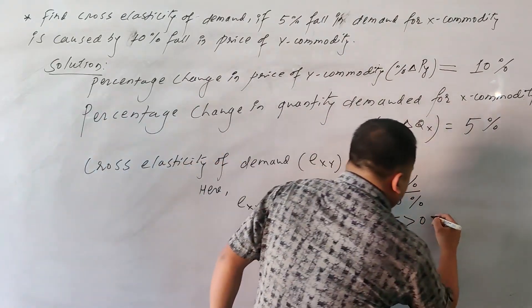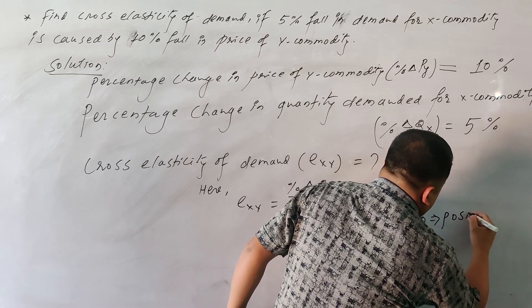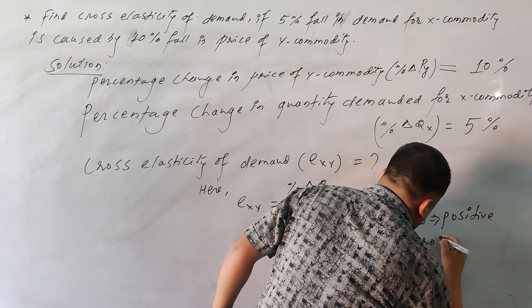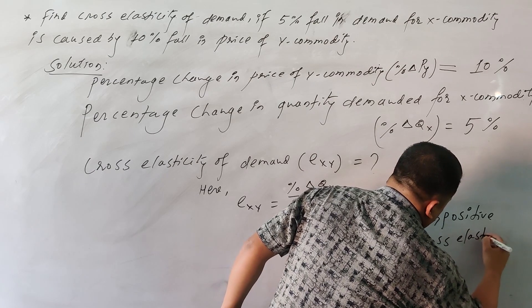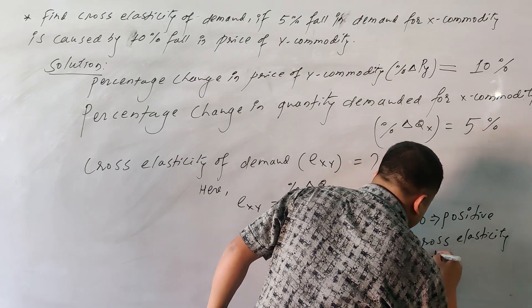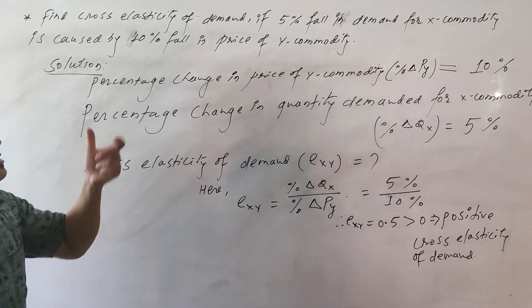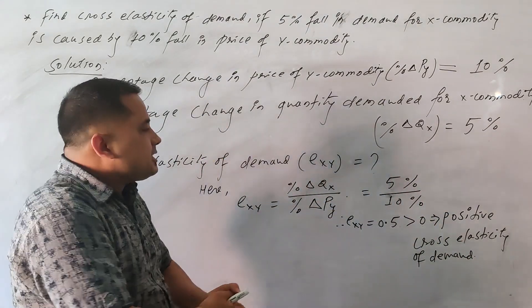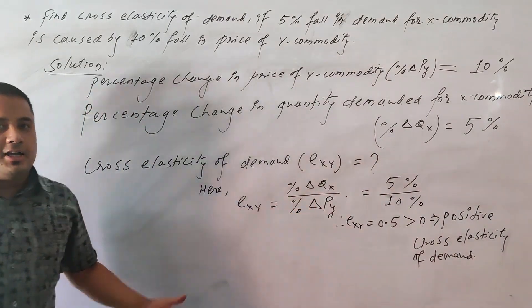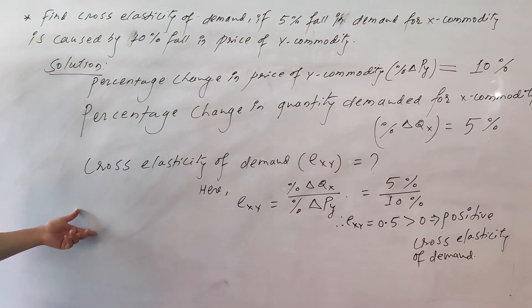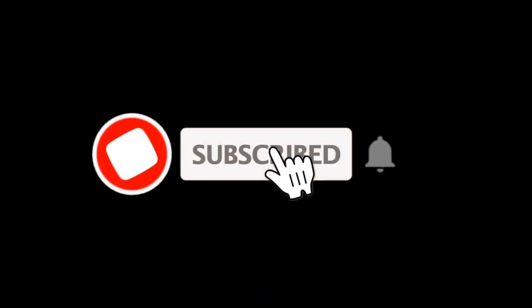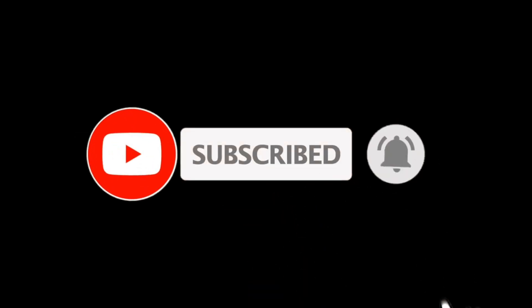Positive cross elasticity of demand indicates that X and Y commodities are substitutable for each other. That is all for this topic; more will be covered in the next video.